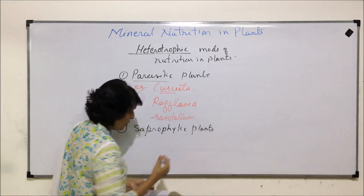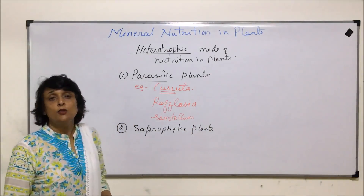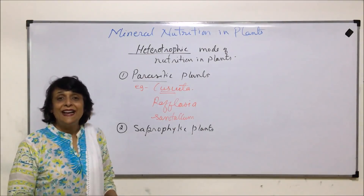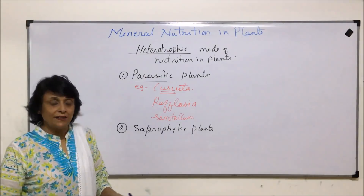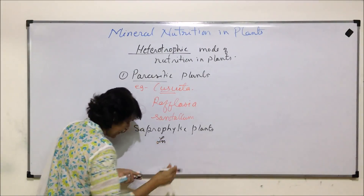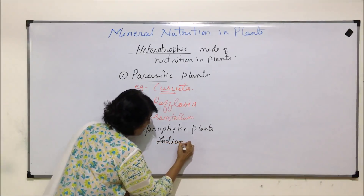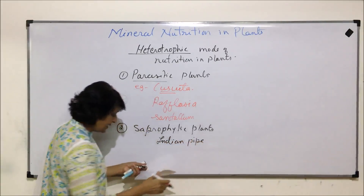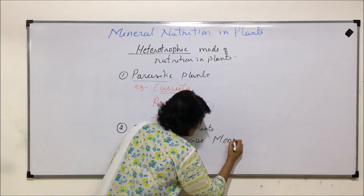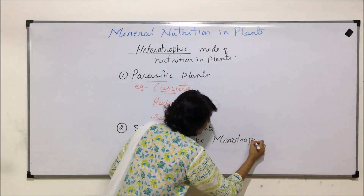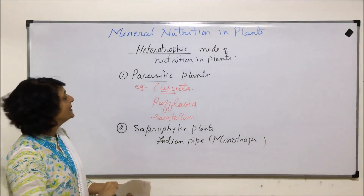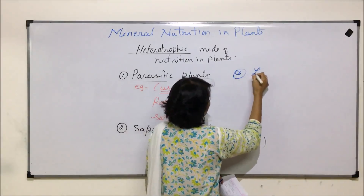So there are certain parasitic plants. The next category is of saprophytic plants - plants which grow or obtain nourishment from dead and decaying matter. The common plant known as Indian pipe, with scientific name Monotropa, is a saprophytic plant. The third category is of insectivorous plants.